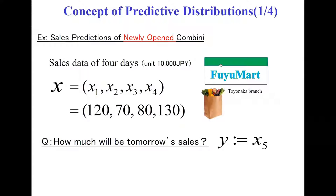Let's talk about the basic concept of Bayesian prediction. Let's take a very simple example: sales predictions of a newly opened convenience shop called Fumont Tonaka Branch. Suppose that we have sales data of four consecutive days.